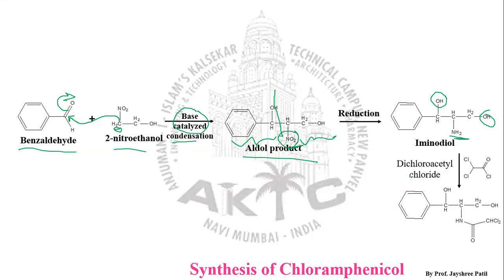Next comes the acylation reaction, carried out in the presence of dichloroacetyl chloride. When the aminodiol attacks the carbonyl carbon, chlorine — being a good leaving group — gets eliminated. We get the addition product where this portion comes from dichloroacetyl chloride and the remaining portion is the aminodiol.